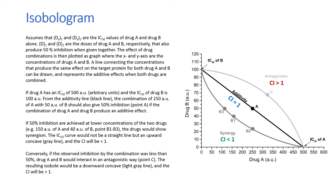Conversely, if the observed inhibition by the combination was less than 50%, drug A and B would interact in an antagonistic way. The resulting isobole would be a downward concave, and the CI will be more than 1.